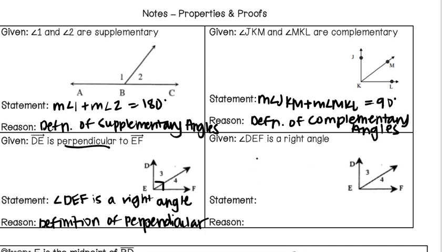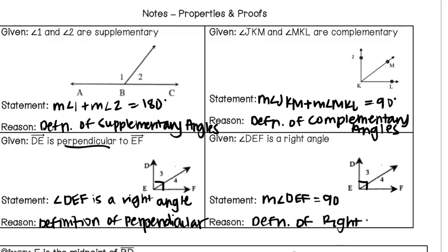In our next example, angle DEF is already told to us as a right angle. What we know about right angles is that they are 90 degrees. So the claim we can make is that the measure of angle DEF is equal to 90. That would be because of the definition of a right angle — since we were only told it was a right angle, we use that definition to make the statement.